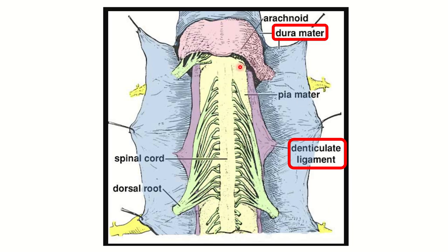In this picture we can see the spinal cord and the different layers of the spinal meninges. Here we can see the arachnoid mater, and here is the pia mater, which is connected with the spinal cord. Outside the pia mater is the arachnoid mater, and outside that is the dura mater.